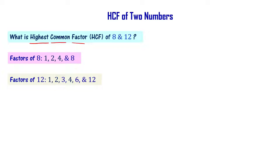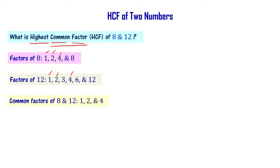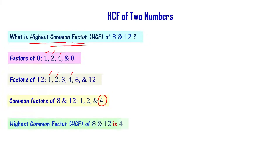Now let us look at common factors. Common factors are 1, 2 and 4. What is the highest common factor? The highest common factor is 4. So the highest common factor of 8 and 12 is 4.